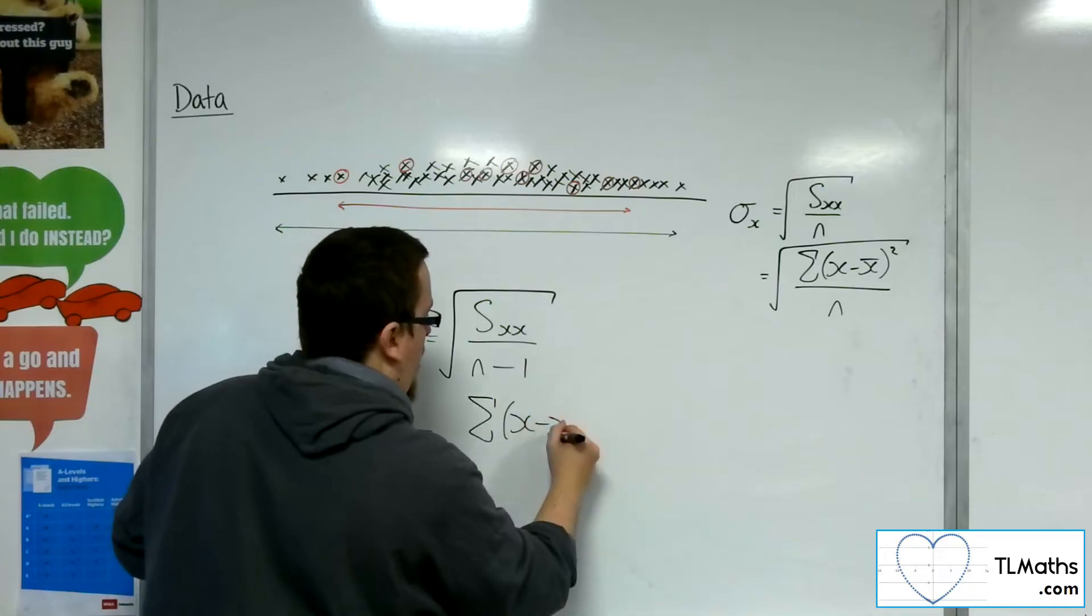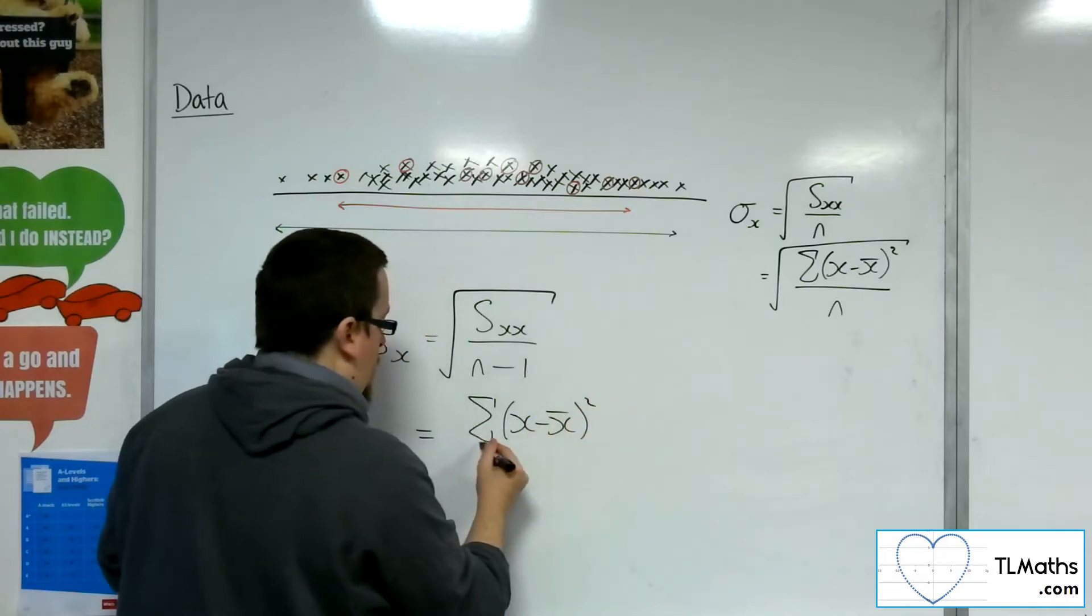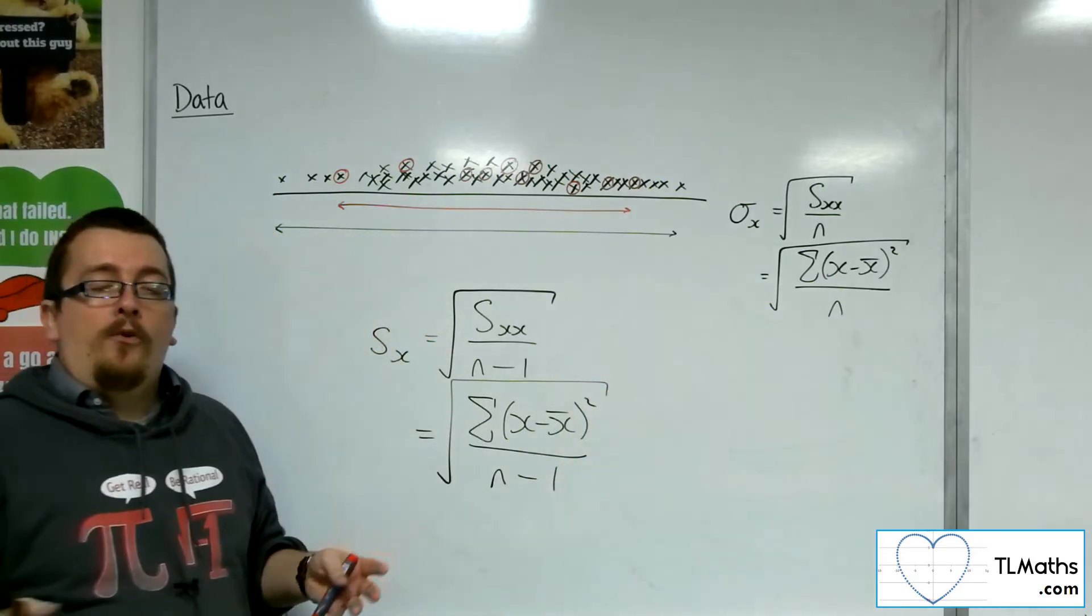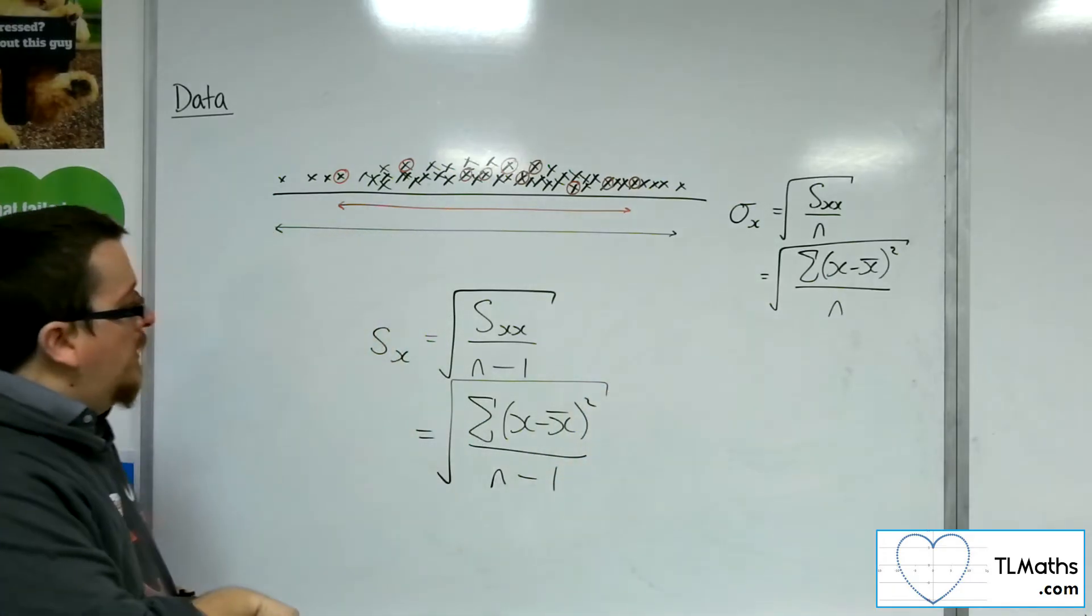Now, you might be wondering, well, where's that minus 1 come from? Why would we pick n minus 1? Why not n minus 2 or n minus 3?